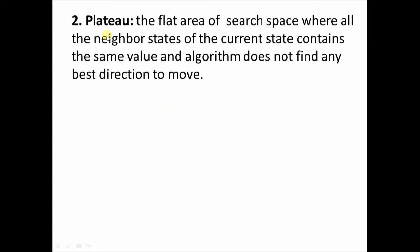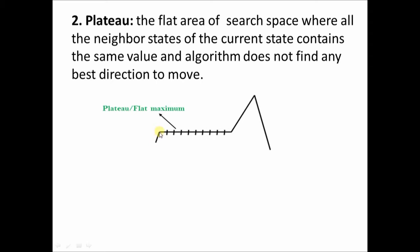The second disadvantage of hill climbing is plateau formation. A plateau is a flat area of the search space where all neighboring states of the current state contain the same value. The agent climbs the hill and reaches a point where all child nodes have the same heuristic value, resulting in a flat line. The algorithm does not find any best direction to move — there is confusion about which child node to prefer. The solution is to take big steps or very little steps while searching — randomly jumping to a different state and starting the search from that point.